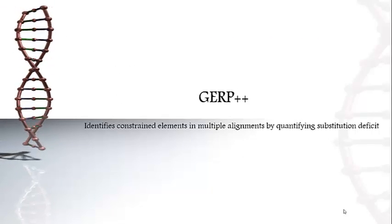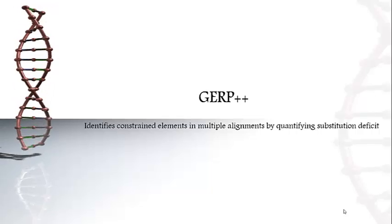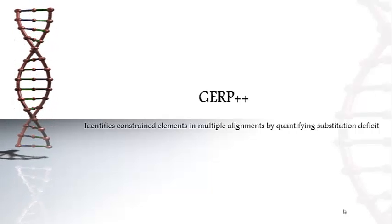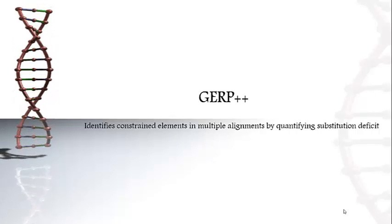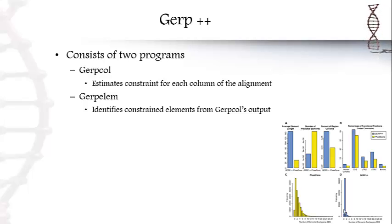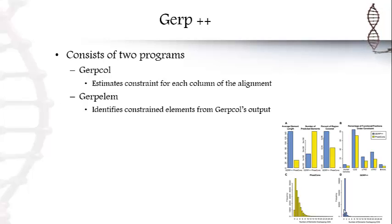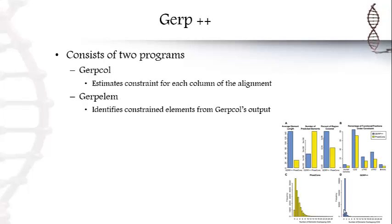GERP++ identifies constrained elements in multiple alignments by quantifying substitution deficit. GERP++ consists of two programs: the GEP call and the GEP column. GEP call estimates constraints for each column of the alignment, while GEP column identifies constrained elements from GEP call's output.